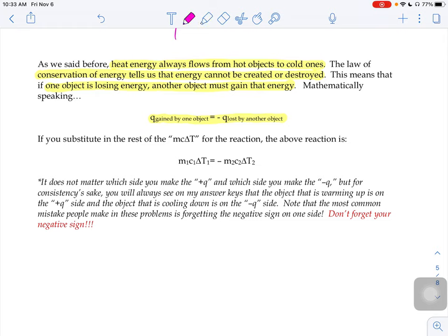You'll see here that the one side I have a negative on, because we said when an object is losing heat energy, when energy is being released, the value of that Q is going to be negative. So if we substituted in MC∆T for our Qs, we get this MC∆T equals negative MC∆T.